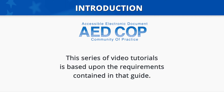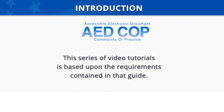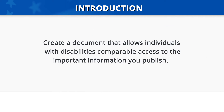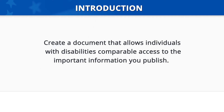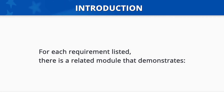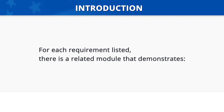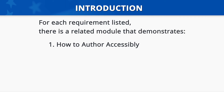This series of video tutorials is based upon the requirements contained in that guide. When you adhere to those requirements, you are creating a document that allows individuals with disabilities comparable access to the important information you publish. For each requirement listed in the Basic Authoring and Testing Guide, there is a related module that demonstrates: 1. How to author accessibly.